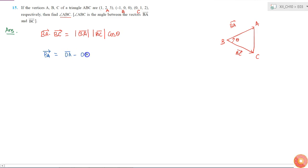Because it starts from B and ends at A. So position vector of A is i cap plus 2j cap plus 3k cap, minus the position vector of B which is minus i cap plus 0j cap plus 0k cap.